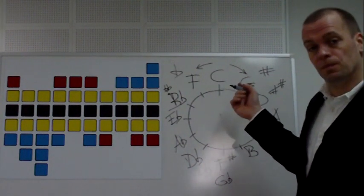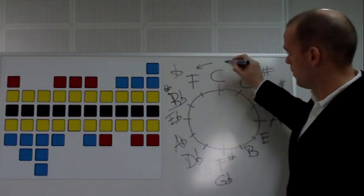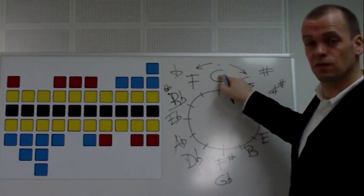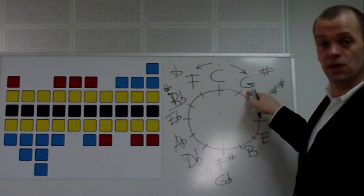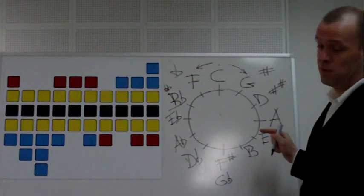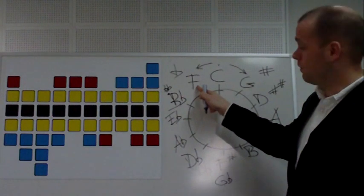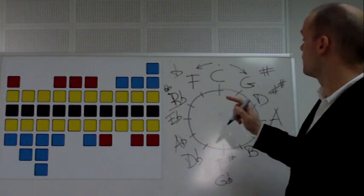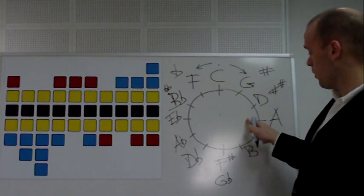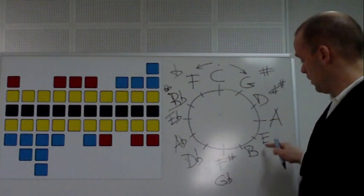How do you use this circle? First of all, the positions are numbered in this circle. If you have a C harmonica and you start on C, this is first position. G is second position, D third position, A fourth position, E fifth position. And the other way around, if you have a C harmonica, then F is first flat position, B flat is second flat position. That works all the way around. If you have an A harmonica, then E is second position, B is third position.